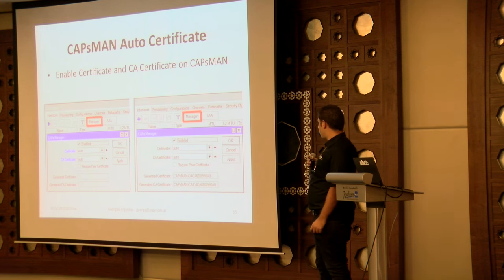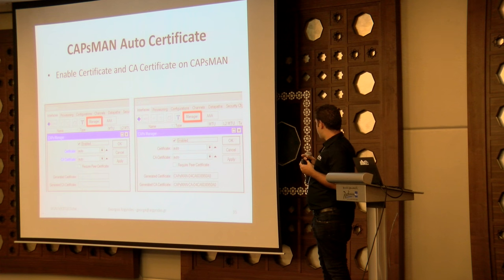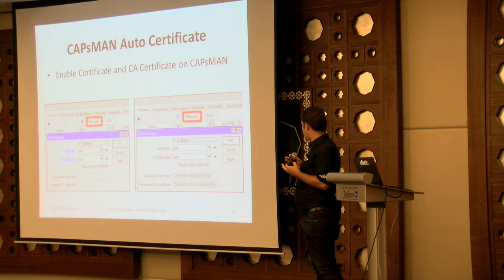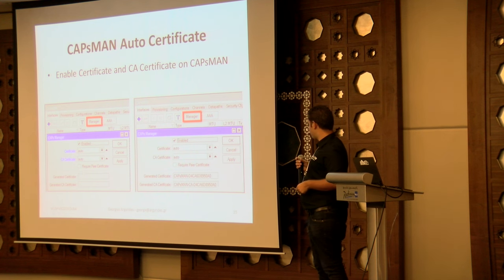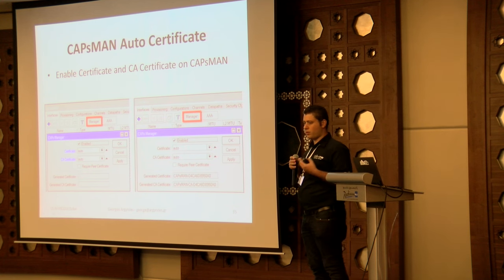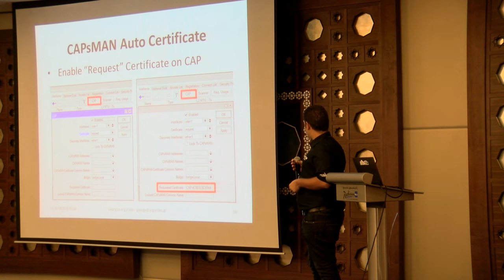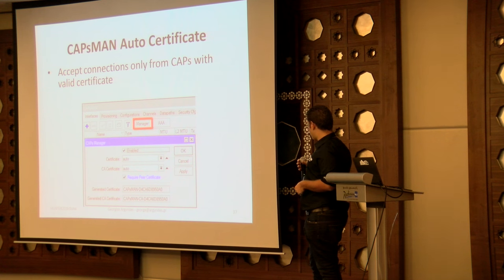We can encrypt the management communication of access points by using certificates. This is only for the access point communication to the CAP — not the data. For data you will need another encryption method like IPsec. With 'auto' you can automatically create certificates on the fly. If you add the 'no insecure connections' option to the manager, it will block connections from access points without valid certificates.